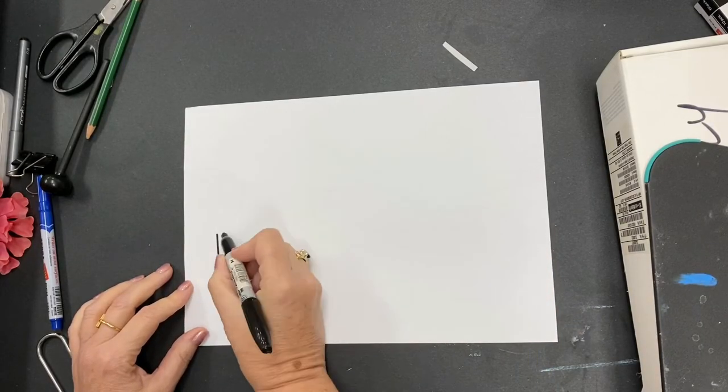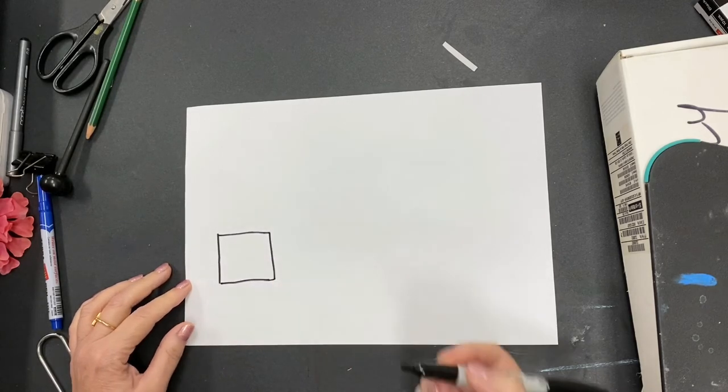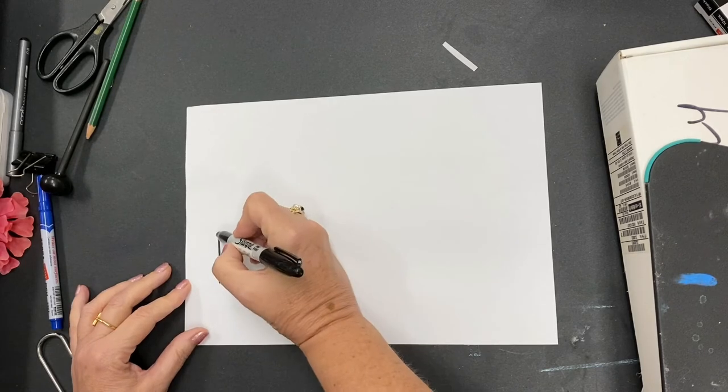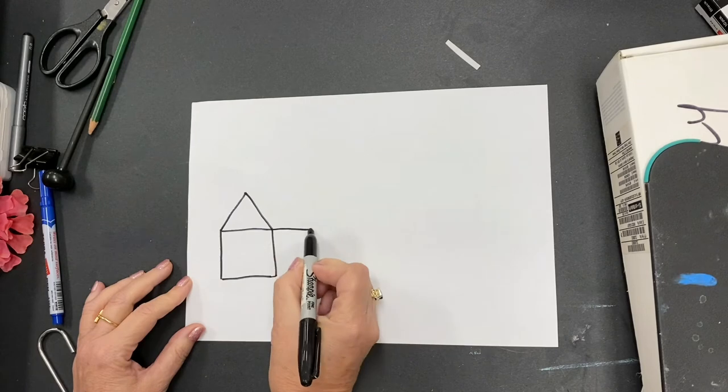So I'm going to start by drawing a square. Now I'm using a marker because it shows up better in the video, but if I were you, I might use a pencil. I might even use a ruler to make my lines more straight, but let's just keep going.